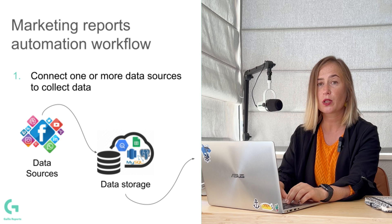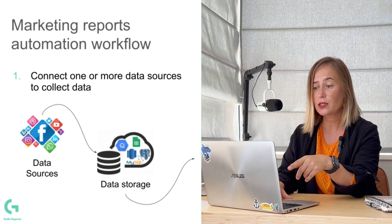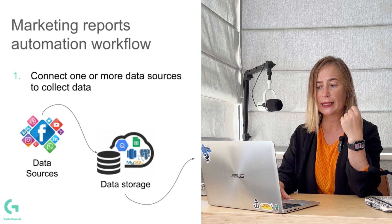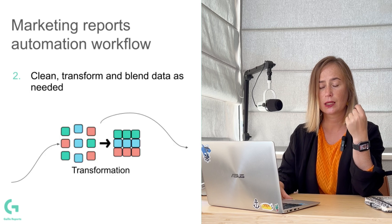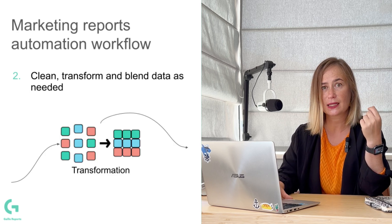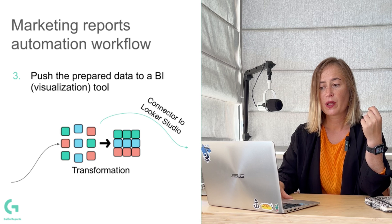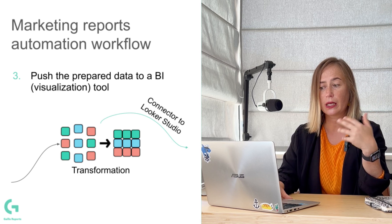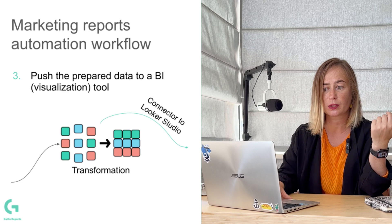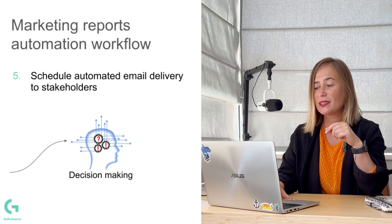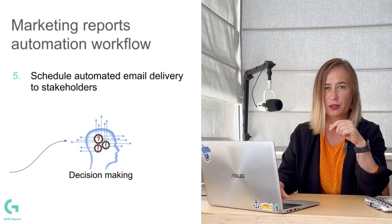The main stages of the automation process: connect one or more data sources to collect data; clean, transform and blend data as needed; push the prepared data to a BI tool — in our case, Looker Studio; create the dashboard itself and schedule automated email delivery to stakeholders.